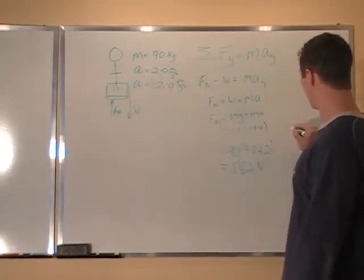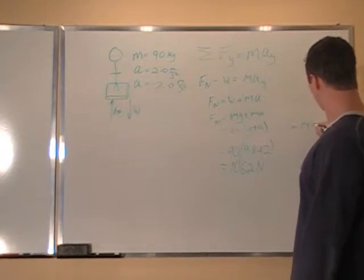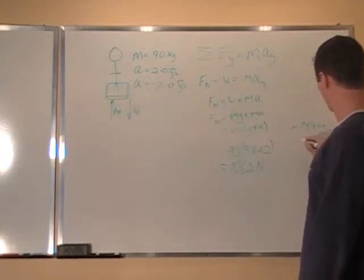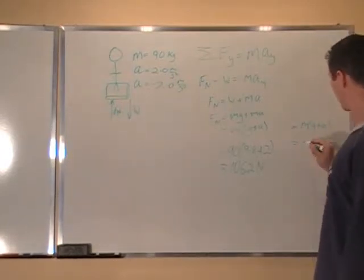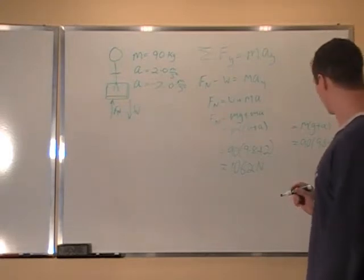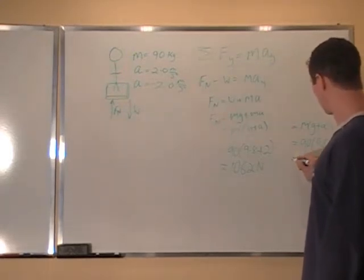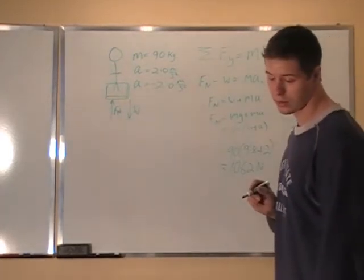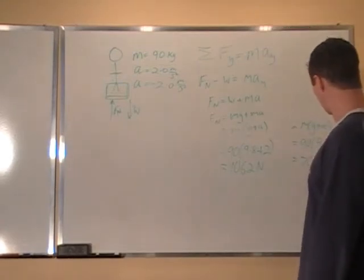In the other case, where A is negative, we're going to have 90 times 9.8 minus 2. Now that's going to give us 7.8, which will give us an answer of 702 Newtons. That's what the scale will read.